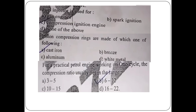For a practical petrol engine working on Otto cycle, the compression ratio usually lies in the range of — let's learn from the Otto cycle. The range is 6 to 12.